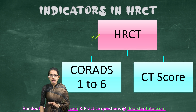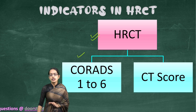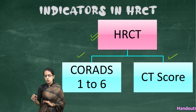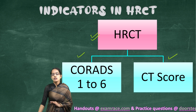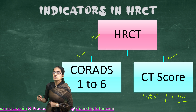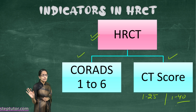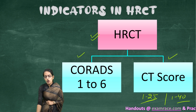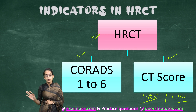The HRCT test has two components: CO-RADS and the CT score. A higher CT score means a higher presence of virus. Different labs have different CT score scales — ranging from 1 to 25 in some labs and 1 to 40 in others. A score of 35–40 on the 1–40 scale, or 20–25 on the 1–25 scale, indicates very significant lung infection, higher viral load, and higher lung damage.